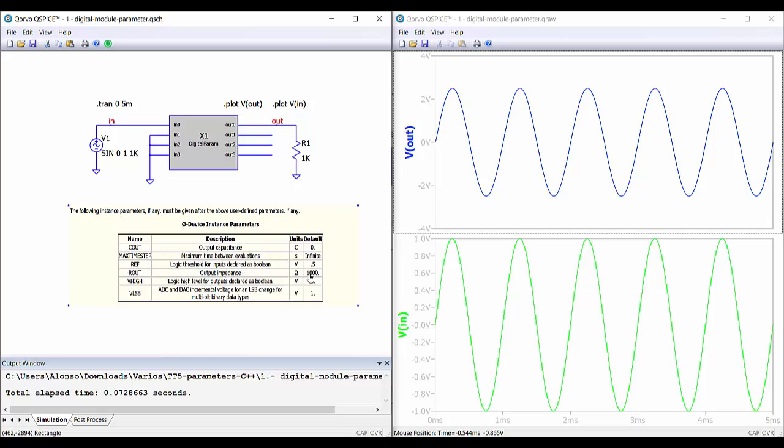And this is because the inherent, the default output resistance of this module is 1000 ohms, is one kilo ohm. So if we want to modify this, then we can do like this. We go to the module, right click, and then we say add new attribute, place the attribute for example here, and we select output voltage.